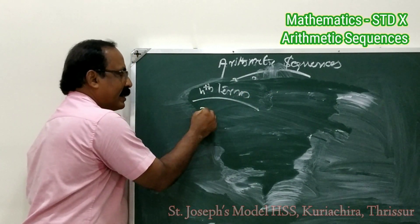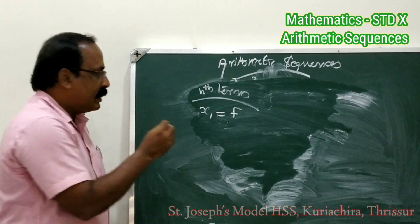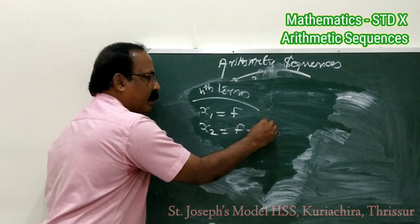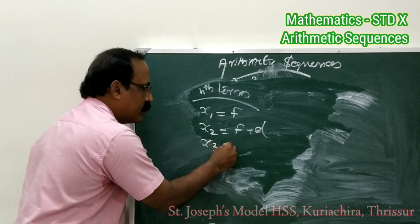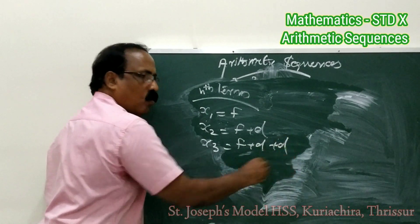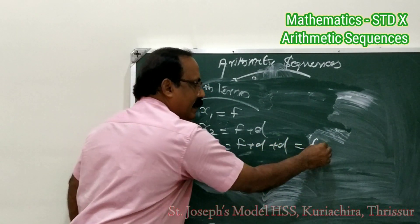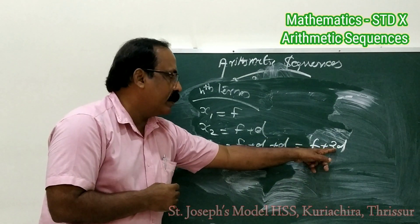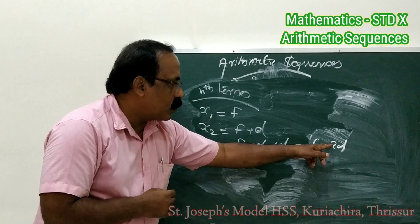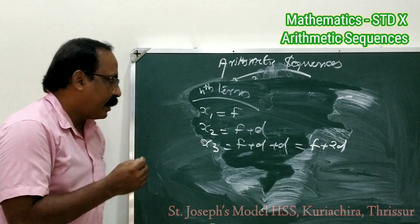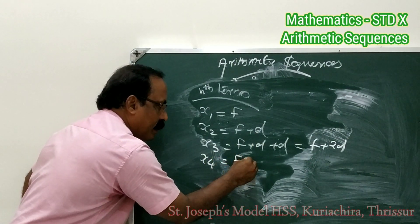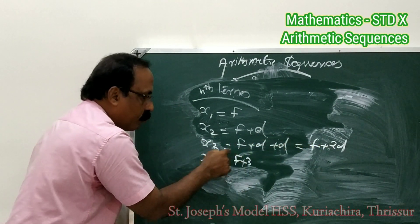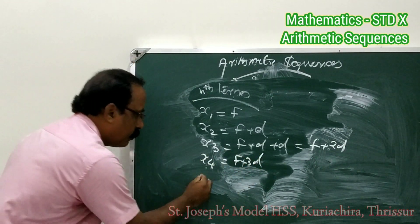So the first term means x1 equals f. The second term x2 equals first term plus common difference, which is f plus d. The third term equals second term plus common difference, that means f plus d plus d, which equals f plus 2d. So the third term is f plus 2d — first term plus two times the common difference, not three times. Can you say what is x4? In the same way, x4 equals first term plus 3d, because 4 minus 1 equals 3. x10 equals f plus 9d.